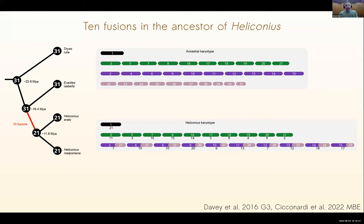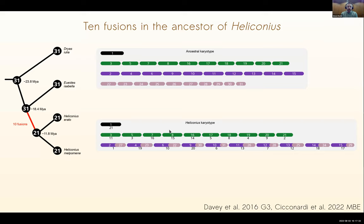Something interesting about Heliconius is they're one of these groups with a different number of chromosomes. This little tree shows two Heliconius species and two outgroup genera. Both outgroup genera have 31 chromosomes, whereas Heliconius have 21 chromosomes. That's the result of 10 fusions that occurred over a reasonably short period in the history of the ancestor of all Heliconius. Those 10 fusions happened between a set of short chromosomes and a set of long ones, so Heliconius went from 30 autosomes to 20 autosomes - 10 unfused (in green) and 10 now fused (in purple).